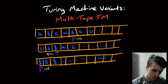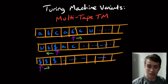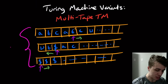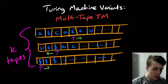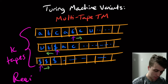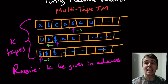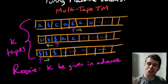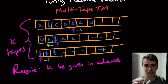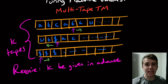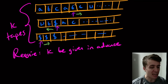Let's think about what we can do here. In general we can have any number of tapes — let's call it K tapes. What we require is that K be given in advance. It's not like I can create or delete a tape at any point, because that actually changes the model of computation. We assume the number of tapes is fixed in advance, but you can specify any number you want — like 100 tapes — you just can't get any more once you start.